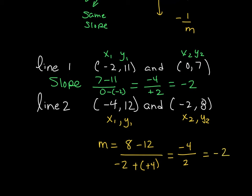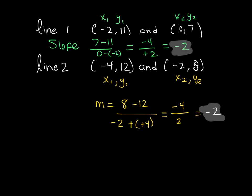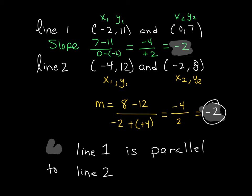So let's compare those two slopes. The slope of my line 1 was negative 2. The slope of my line 2 was also negative 2. So that tells me that line 1 is parallel to line 2. And the only time that happens is if the slopes are exactly the same.